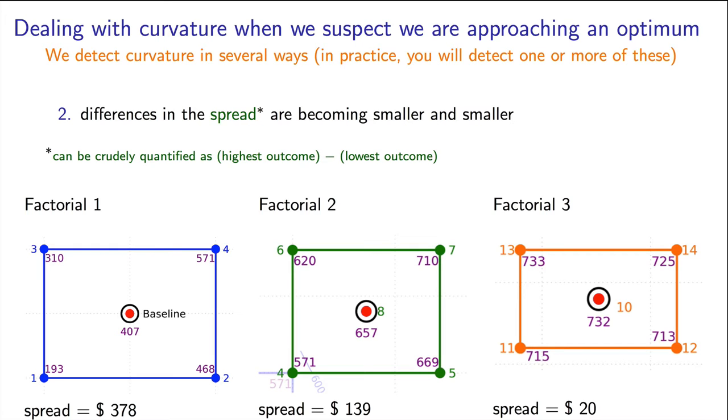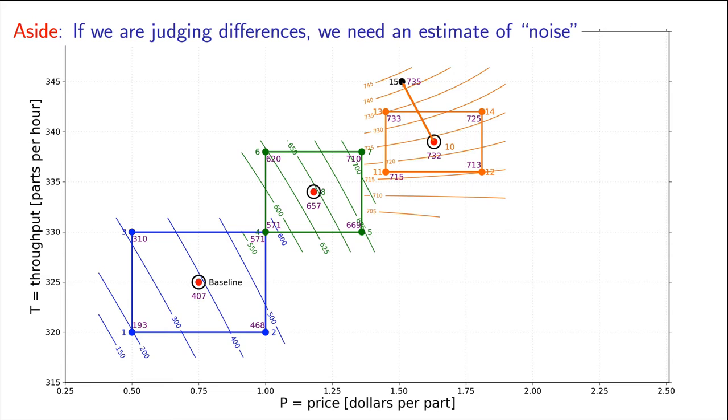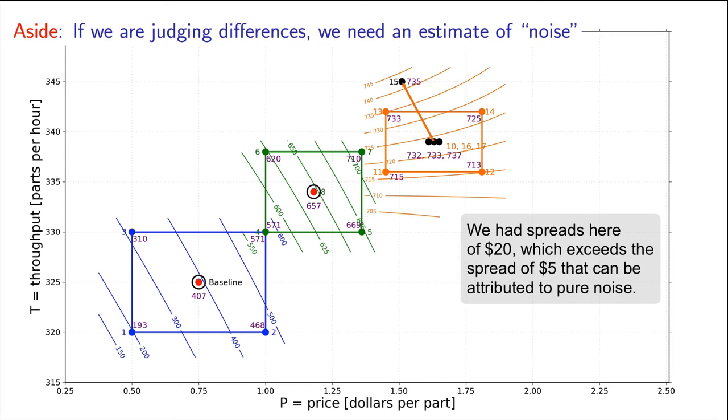Another way to ask that is if we repeated those corner experiments, would we get similar values or different values? So let's go calculate what the noise level is. Run at least three or four repeated experiments at the same condition, and we typically use the baseline. So here at the base of the factorial, I previously had an outcome of $732, and two more runs give me an outcome of $733 and $737. So there's a spread of about $5. That spread is very different to the spread over the corner points of the factorial, indicating I'm still seeing signal over the noise.